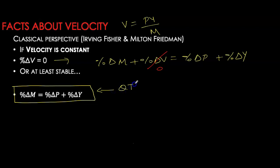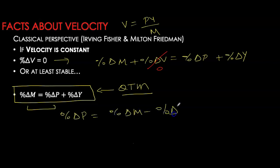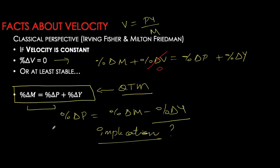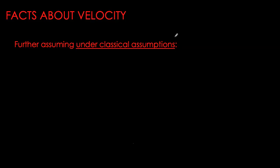With velocity constant, we have now arrived at our quantity theory of money. This shows a very significant positive relationship between money growth and inflation — the higher the money growth rate, the higher the inflation level. Rearranging to solve for inflation, we see that the inflation rate is negatively impacted by the growth rate in real GDP. An economy with a very high money growth rate that is also experiencing real growth will have a lower overall inflation rate. The policy implication is strong: policy makers should keep the money growth rate equal to the desired inflation level plus the real growth rate.